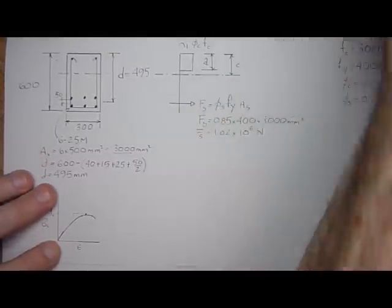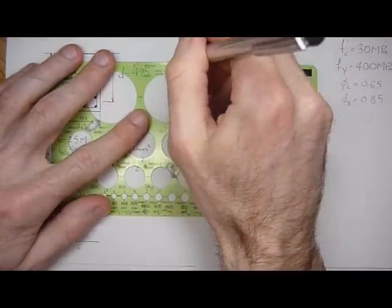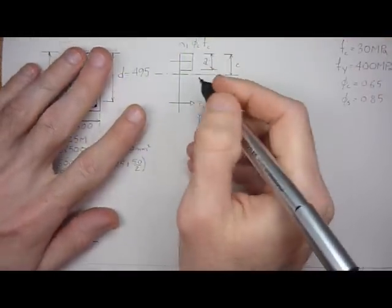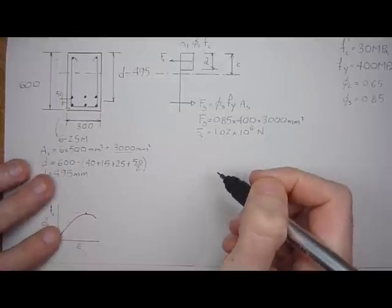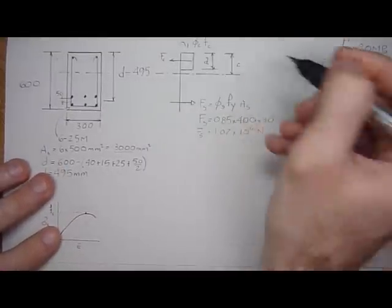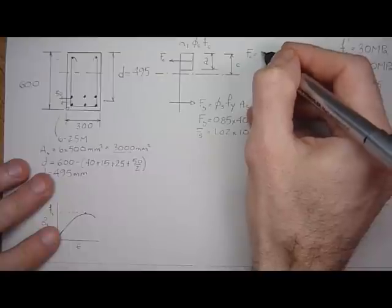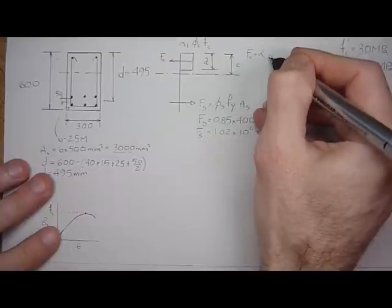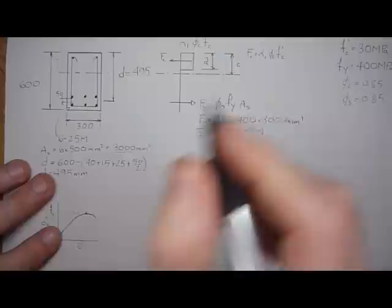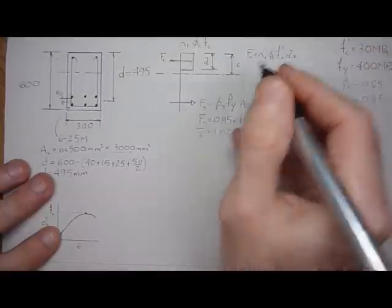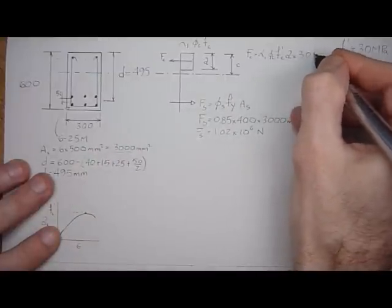So if we wanted to find out the force in the concrete, which would be right through the centroid of the stress distribution, the force in the concrete, we would say, I'll write it out here, force in the concrete is alpha 1, phi c, f prime c, times a, times the width of the section, 300 mm in our case.